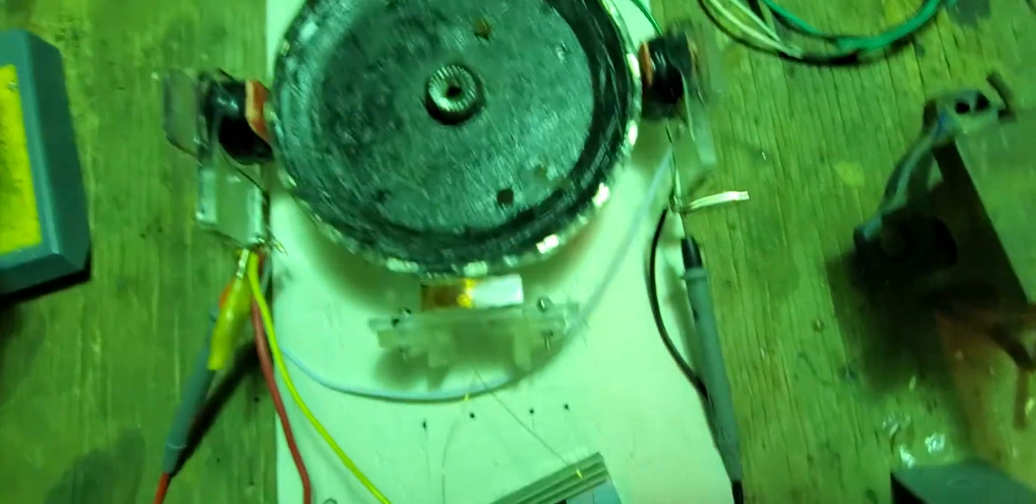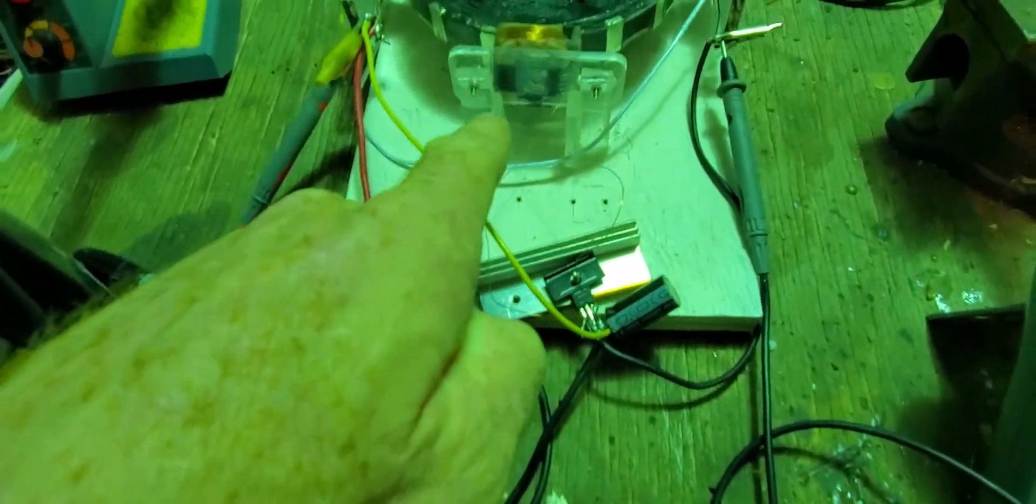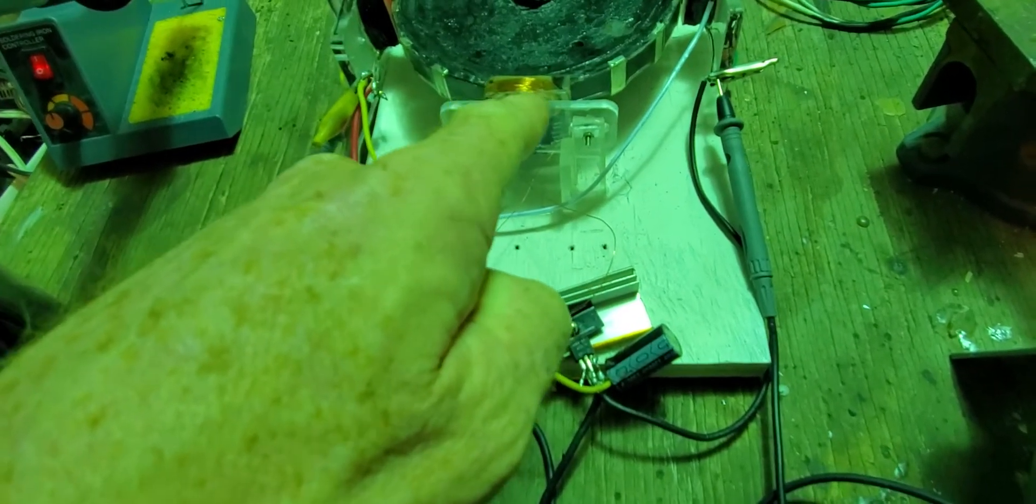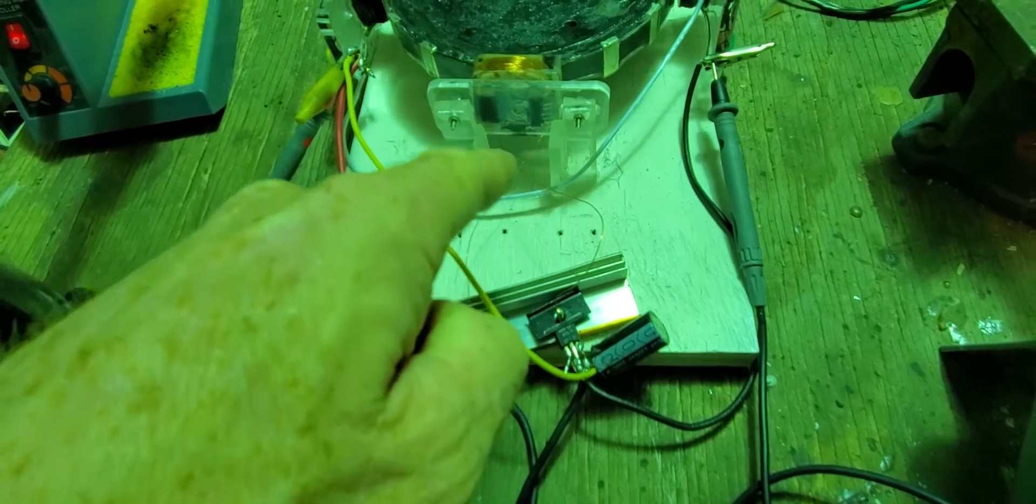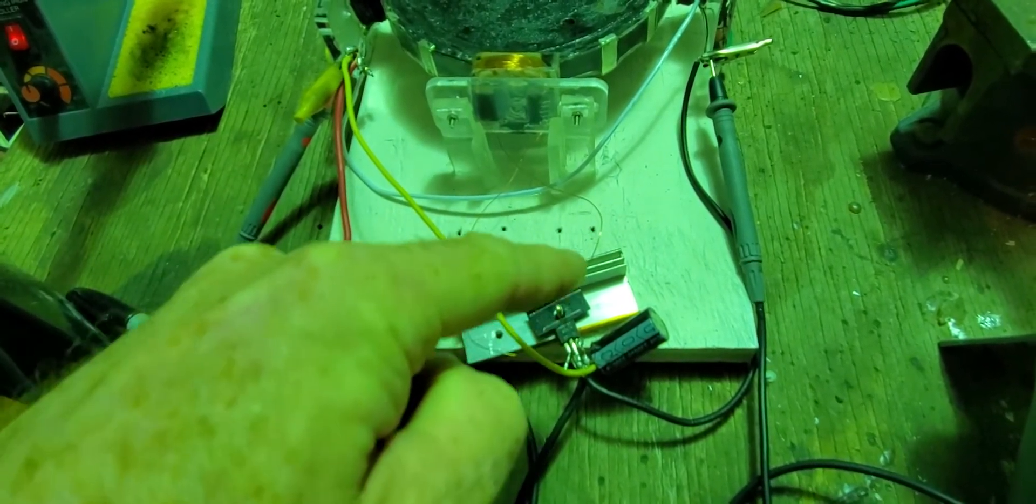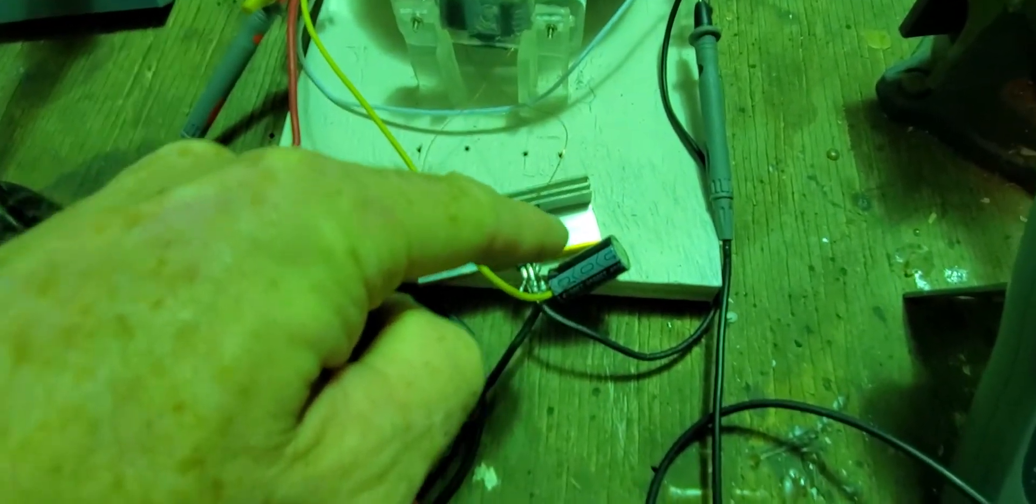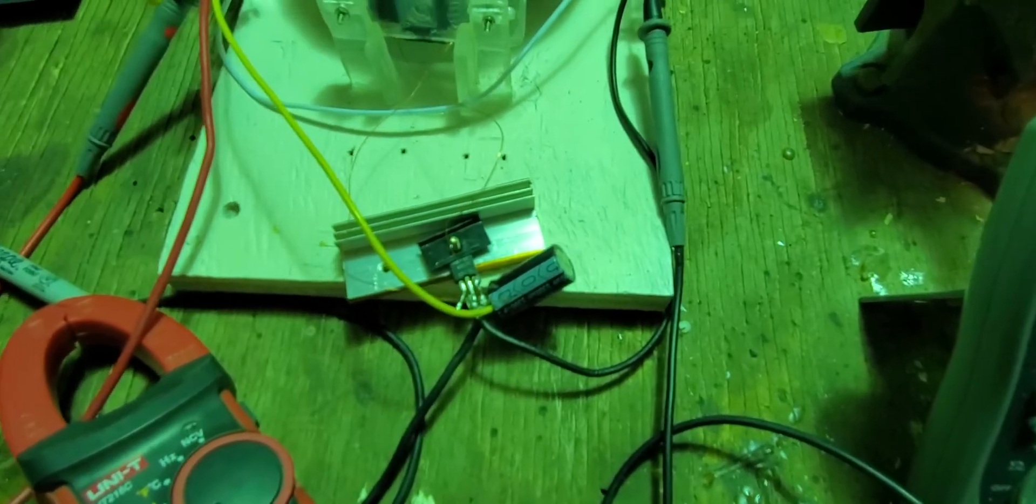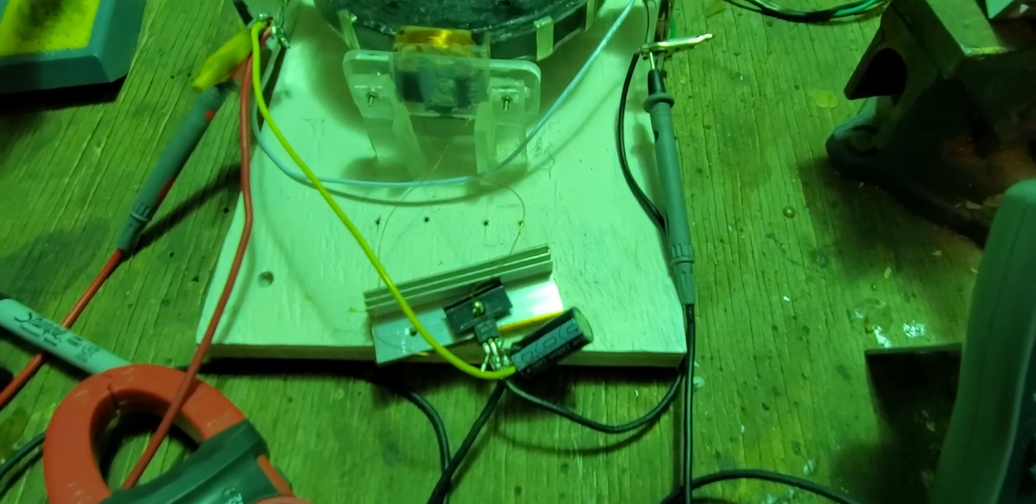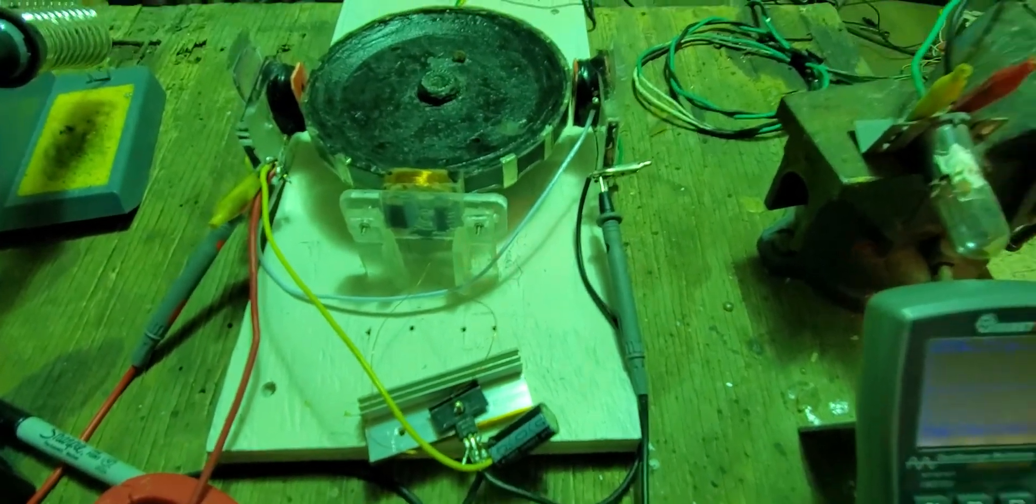And then to get it to run, if it doesn't run on your first try, all you have to do is flip these wires. Take the one that's on the base and put it on the emitter. Take the one that's on the emitter and put it on the base. And if it doesn't start after that, then you got an electrical problem.